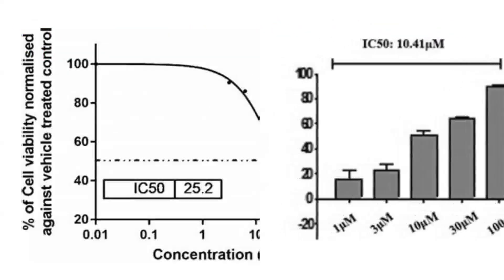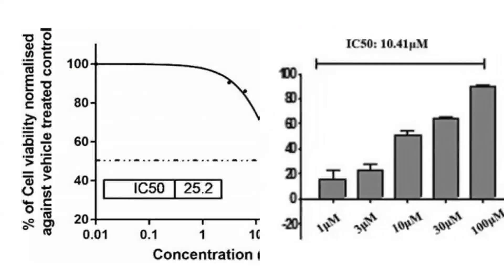As shown in the figure, concentration is plotted on the x-axis against percent cell viability normalized against vehicle-treated control, allowing us to determine at what concentration each effect is observed and to identify the IC50. In the example diagram, at 10.41 micromolar, 50% of cells have died, representing the IC50 for that specific assay.